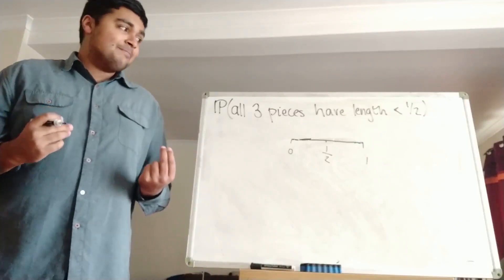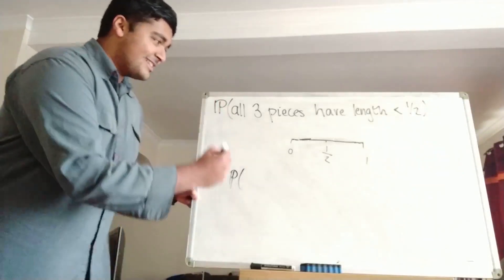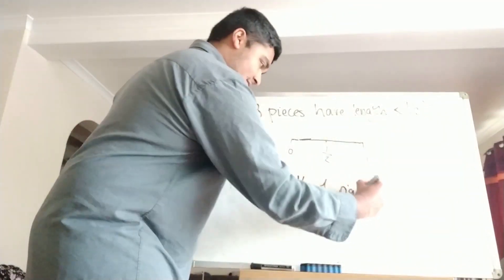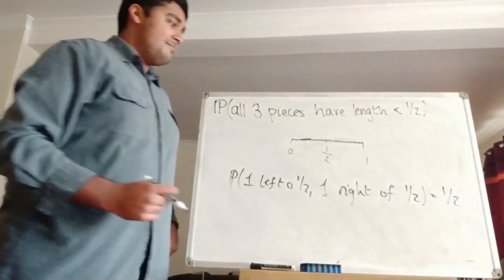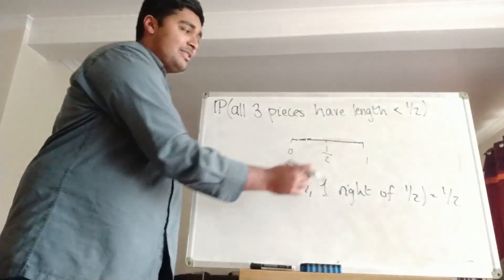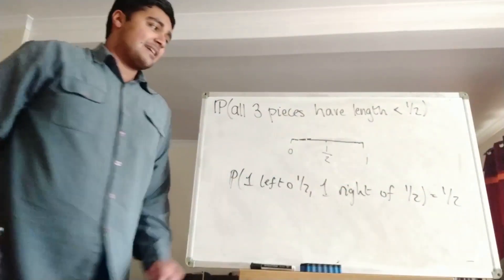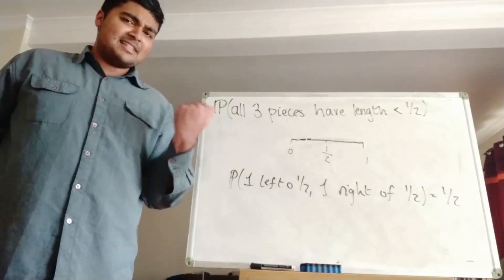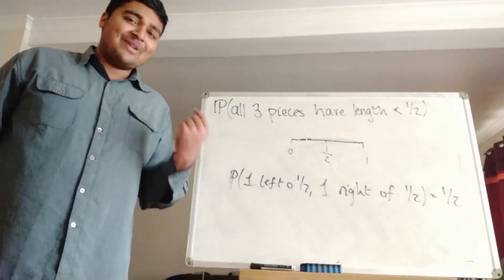But notice that having one cut on each side isn't sufficient — for example, you could still get a very long middle piece. Nonetheless, what's the probability that one cut is to the left and one to the right of the midpoint? By symmetry, that's clearly one half. Considering the four options — first point left and second right, first right and second left, both left, both right — the probability of one being left and one being right is one half. But of course, as I just said, that isn't sufficient.